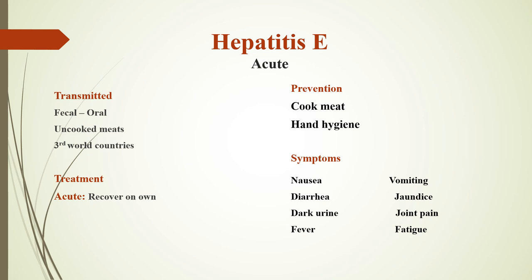Hepatitis E is only acute. It is very similar to hepatitis A. It is transmitted by fecal-oral route, by uncooked meats, and is also more common in third world countries. The treatment is just to recover on your own. The prevention is to cook your meat very well and wash your hands well. The symptoms are nausea, diarrhea, dark urine, fever, vomiting, jaundice, joint pain, and fatigue.